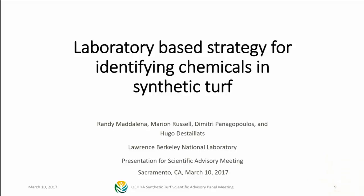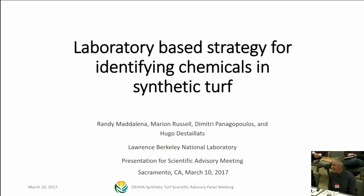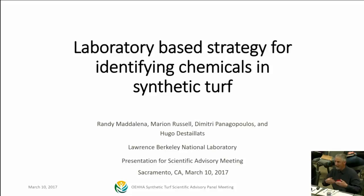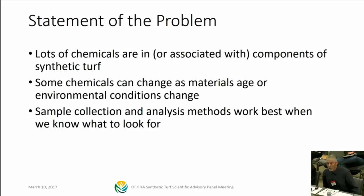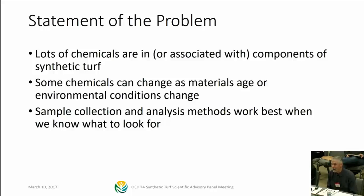Thank you. I'm going to repeat what you just heard at a slightly more technical level from the laboratory's perspective and fill in some blanks. The statement of the problem, from the chemist's perspective, is there are potentially a lot of chemicals in the components of synthetic turf. Some of these chemicals will change their chemical identity over time or under different conditions — for example, fresh crumb rubber has a chemical fingerprint, but exposure to sun or ozone may produce a different fingerprint and composition.